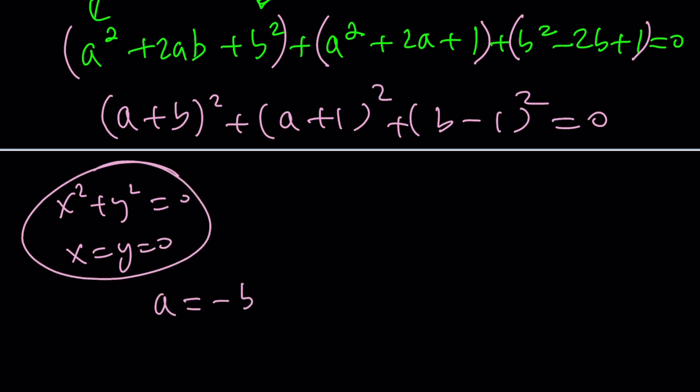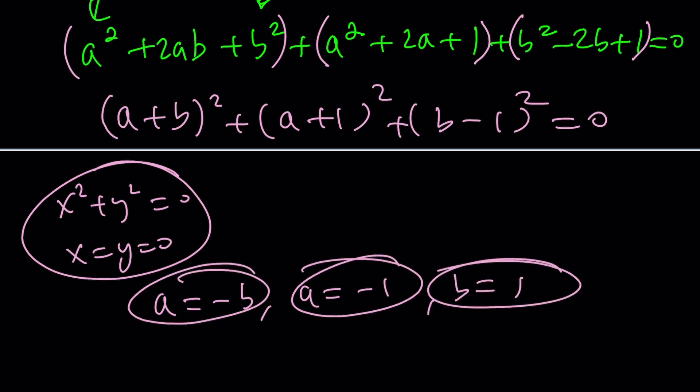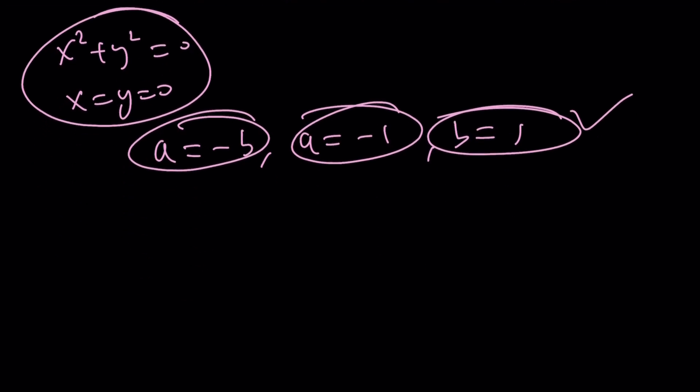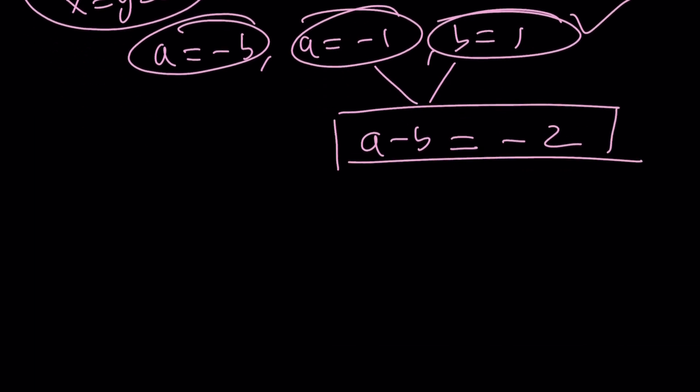From here, we get the following: a = -b, a = -1, b = 1, which is always satisfied with these three equations. They're consistent. And that gives us the value: a is -1, b is 1. But we're looking for a - b, so it's -2. We got another value for a - b, which is nice.